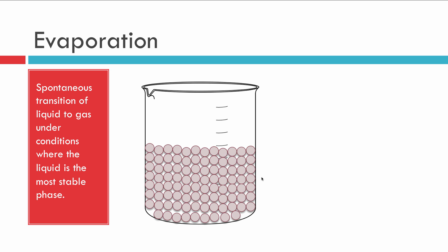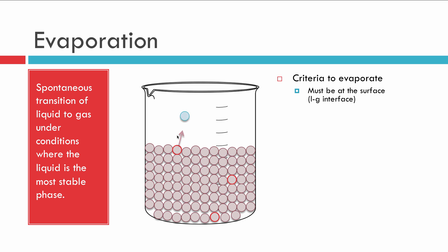We start by choosing a few molecules to concentrate on. In this jar I've got some liquid, and I've chosen to look at three — one at the surface, one in the middle, one at the bottom. Evaporation is a liquid-to-gas transition, a vaporization of a few molecules at a time. Above the liquid there is room for gas. So the first criterion to evaporate is that a molecule must be near the liquid-to-gas interface so that when it does leave, it can make the transition to become a free particle of gas.